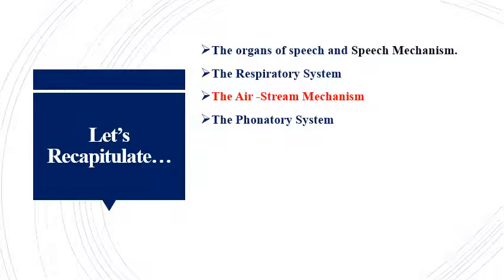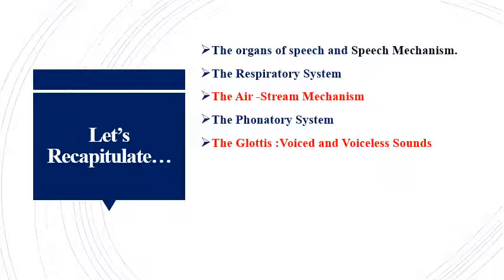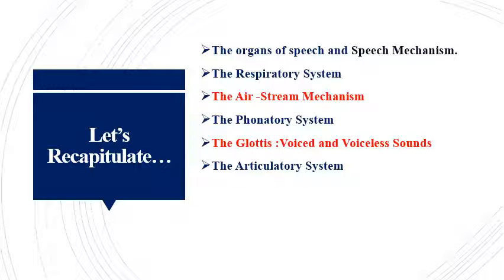In the second session on speech mechanism, we discussed how the air stream is processed at the larynx in the phonatory system, which is called the voice box. The vocal cords play an important role in the articulation of voiced and voiceless sounds. We also discussed the glottis, which is the open space between the two vocal cords. In the third and final session on speech mechanism, the role of the articulatory system was explained.